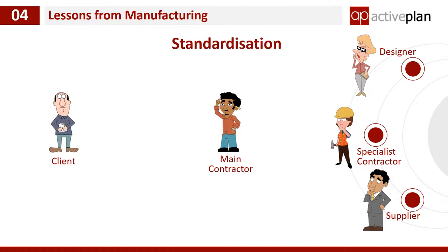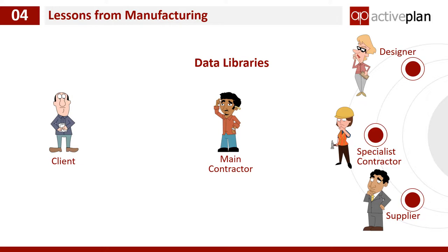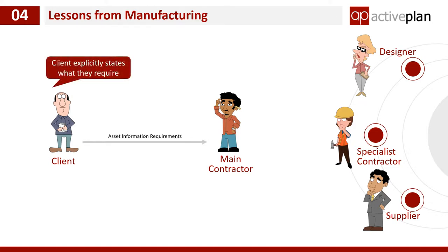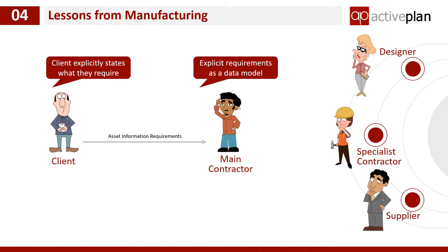Standardisation makes life a lot easier. So that's exactly what we've done at ActivePlan — we've developed a new platform that uses standardised data libraries that makes it much easier for a client to define exactly what they want and how it should be formatted. The ActivePlan AIR gives the main contractor an explicit set of data requirements, not just as a document but as a data model that can be delivered as a file that can be read into the individual suppliers' own authoring applications.